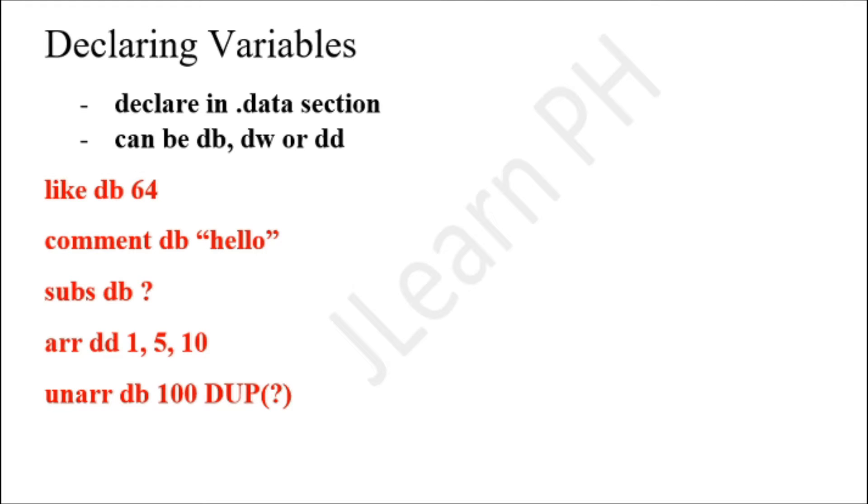Okay, so welcome back. Today we'll be talking about how we declare variables in MASM32 assembly. In assembly language, you can only declare global variables in the .data section. Take note of that.